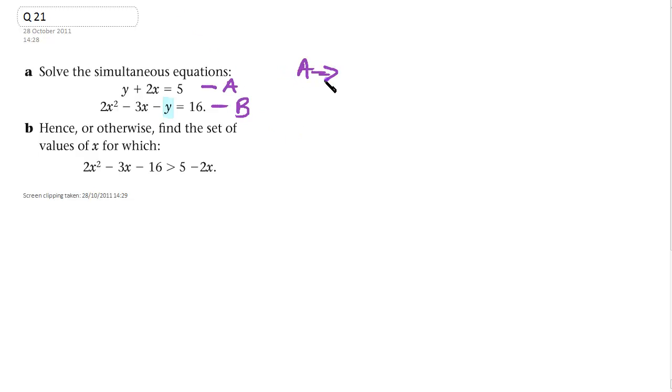So if we rearrange equation A, we get y equal to 5 minus 2x, and then we substitute into B. So we're going to take this bit here and substitute it in for the y here.